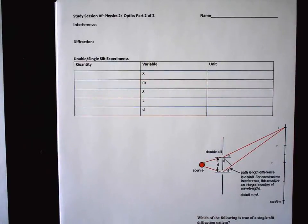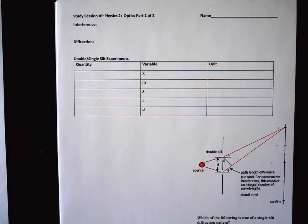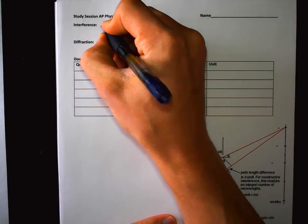All right, time for optics part two. I recommend making it a party — get some popcorn, pause right now, make some popcorn, get an icy cold beverage. Maybe some Mountain Dew, coffee and popcorn — that's what I've got going here. We're going to do interference, diffraction, and double slit experiments.